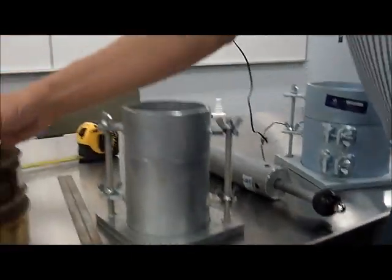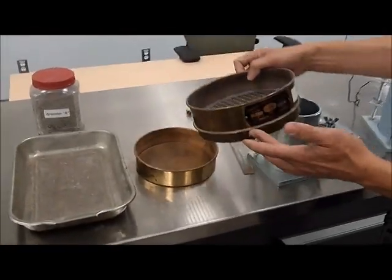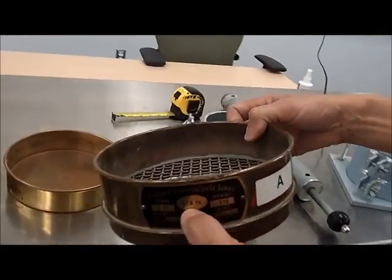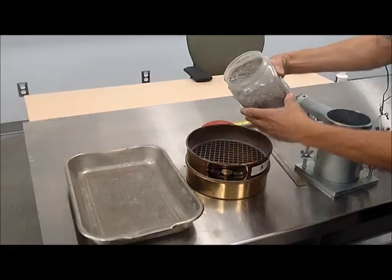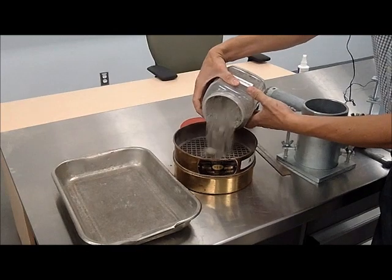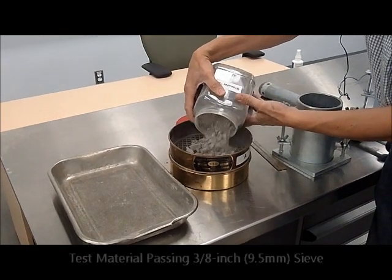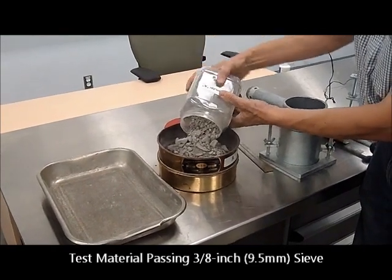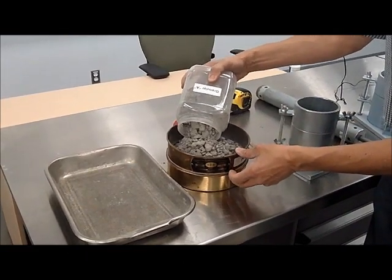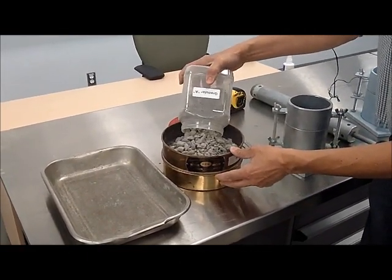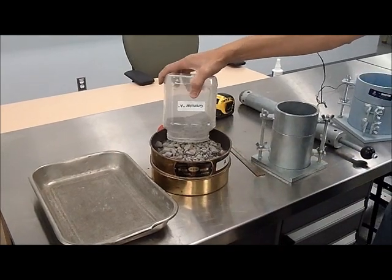So what the material requires for preparation is to make sure that we remove the material that is coarser than 3/8 of an inch. We're placing, making sure that we don't lose material other than what's required.